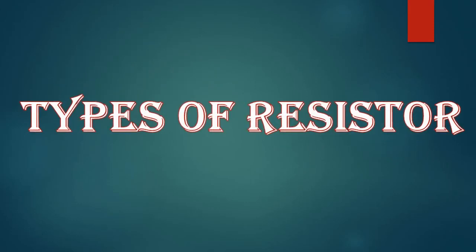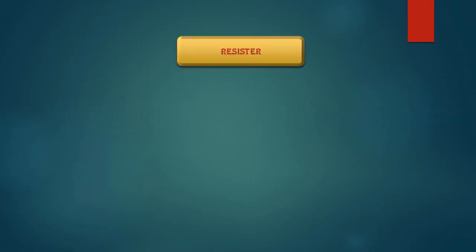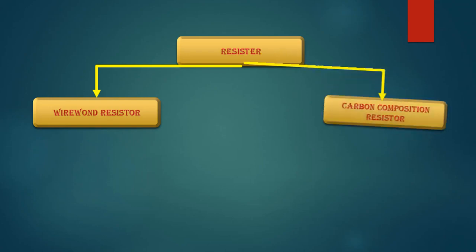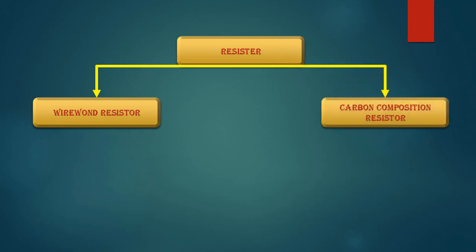The resistor has two types. The first type is wire wound resistor, while the second is carbon composition resistor.